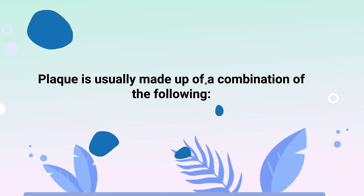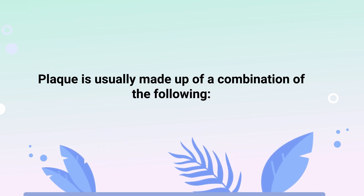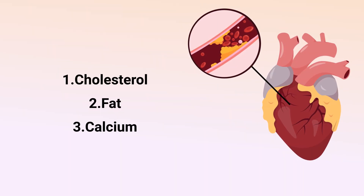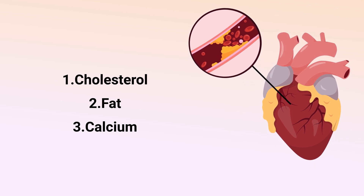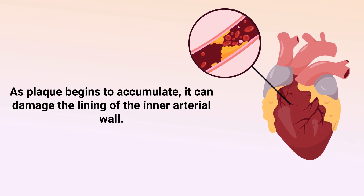In general, plaque is usually made up of a combination of the following: cholesterol, fat, calcium, and other substances found in the blood. As plaque begins to accumulate,